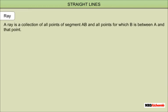A ray is a collection of all points of segment AB and all points for which B is between A and that point. A ray is named by naming its endpoint followed by any other point on the ray. The name of this ray is ray AB. It has one endpoint.